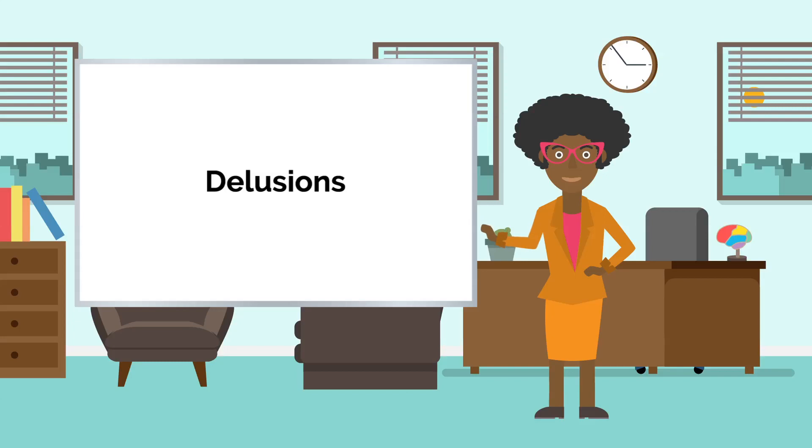Delusions are irrational beliefs. For example, delusions of persecution are thoughts that the sufferer is being watched, monitored, or controlled by outside forces. Delusions of grandeur involve the belief that the sufferer is an important historical figure.